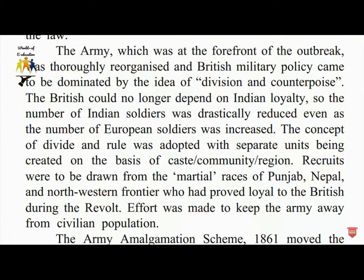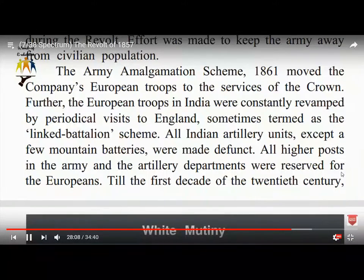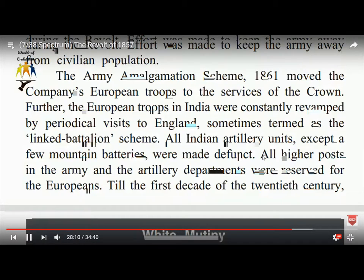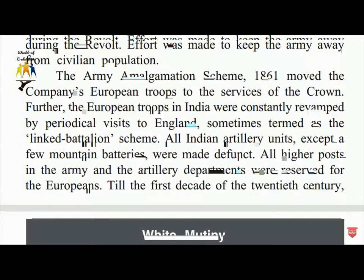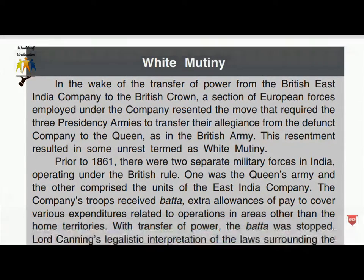The Army Amalgamation Scheme of 1861 moved the company's European troops to the service of the Crown. In the wake of the transfer of power from the East India Company to the British Crown, a section of the European forces resented the move that required the presidency armies to transfer their allegiance from the defunct company to the Queen as in the British Army. This resentment resulted in some unrest, termed the White Mutiny.